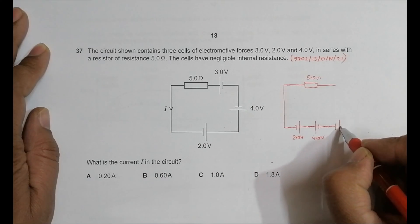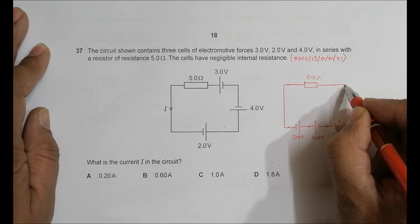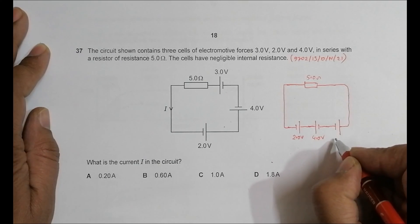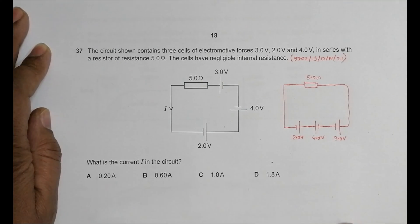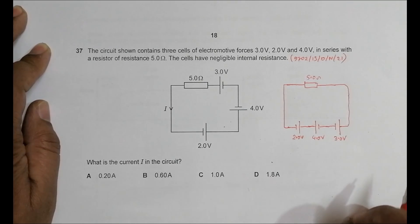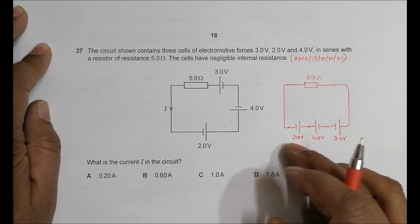Then from here it will be negative of 3.0V, then positive. From positive it goes to the 5 ohm negative, like this. So this is 3.0 volts. This is the simplified form of the above circuit.